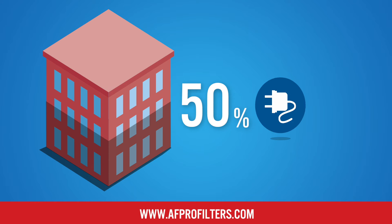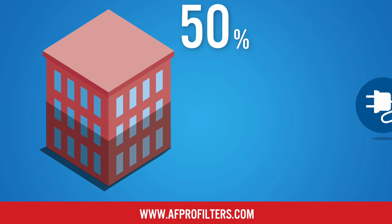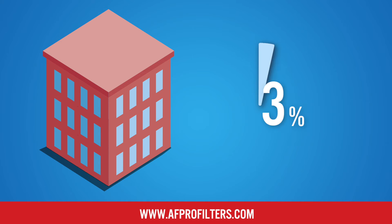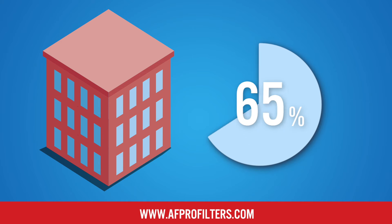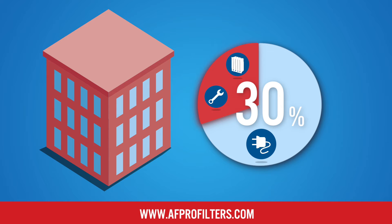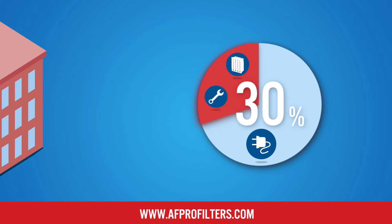On average, 50% of a building's energy costs can be attributed to air ventilation, temperature, and humidity. In practice, an average of 70% is related to air filter energy consumption and 30% to the purchase price and installation costs.